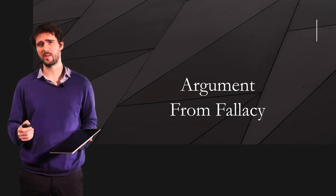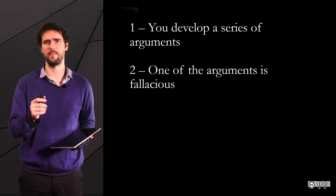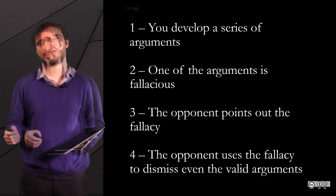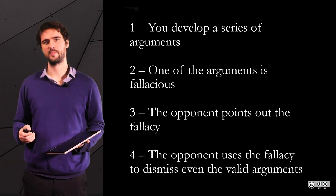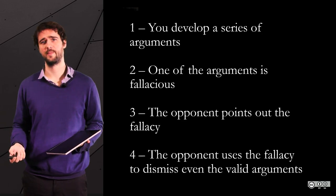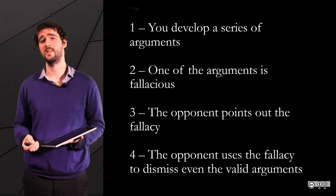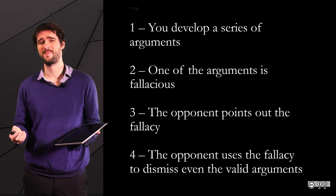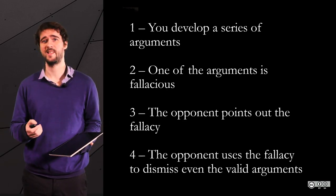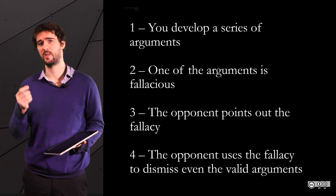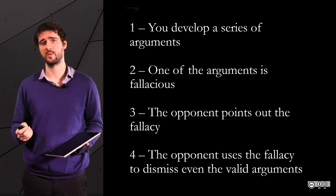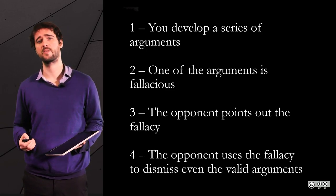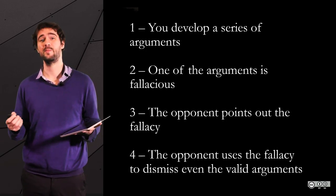It goes this way: you make a series of arguments, and your opponent picks up a bad one and uses it to dismiss rather sound arguments. We can model it as follows: Argument A for the conclusion C is bad — therefore, C is false. To say that an argument is fallacious is, among other things, to claim that there is not a sufficiently strong logical connection between the premises and the conclusion. This says nothing about the truth or falsity of the conclusion; the conclusion could just as well be true.